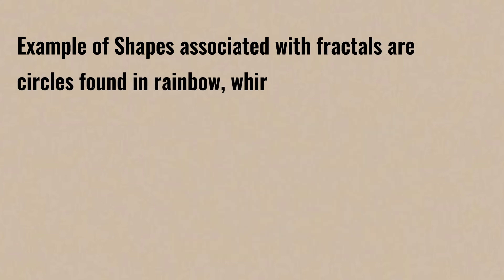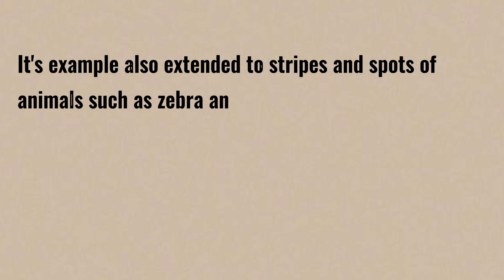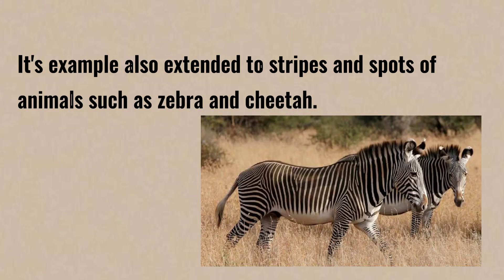Examples of shapes associated with fractals are circles found in rainbows, whirlpools, and tiny vortices. Its examples also extend to stripes and spots of animals such as zebras and cheetahs.